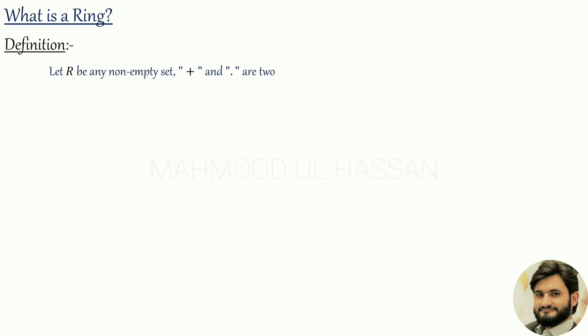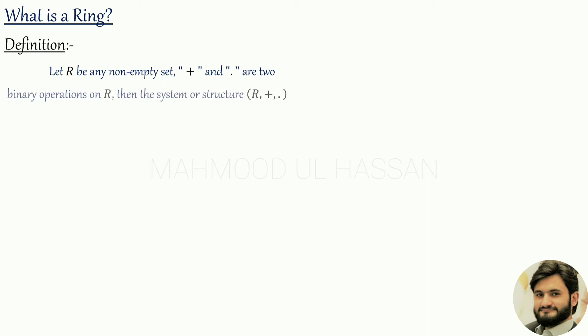Definition. Let R be any non-empty set; addition and multiplication are two binary operations on set R. Then the system R, with binary operations of addition and multiplication, is said to be a ring if the following conditions are satisfied. R is a non-empty set.